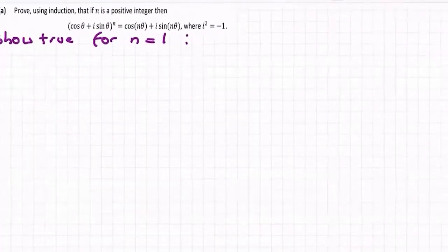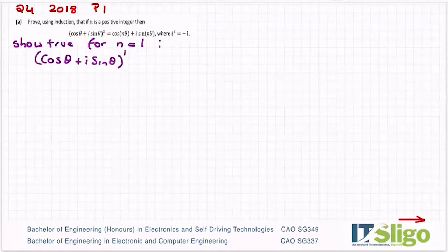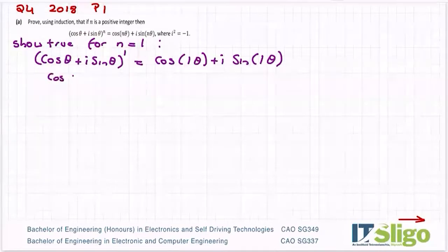So what you do is you sub in n is equal to 1 on the left hand side. So cos theta plus i sine theta to the power of 1 and you show that the left hand side equals the right hand side when you sub in that 1. Let's sub in 1 for n on the right hand side. And cos theta plus i sine theta is indeed equal to cos theta plus i sine theta.